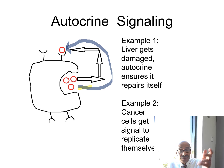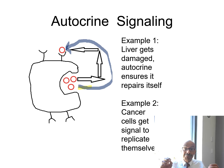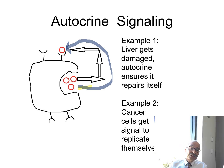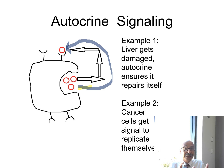Our liver regenerates, and when it doesn't, that's when we get permanent liver damage. If we could get cells to repair themselves, that would be marvelous, but it is hard to make cells repair themselves. A bad example of autocrine signaling is cancer — cancer cells get signals from the same cells to replicate and produce more. If we could inhibit that growth, we could eliminate the cancer, but our current technology cannot do that.